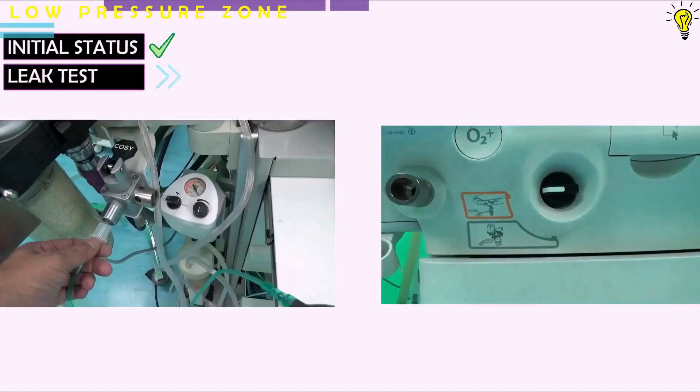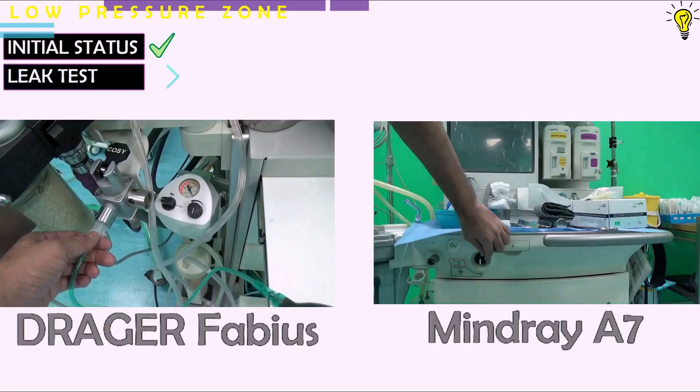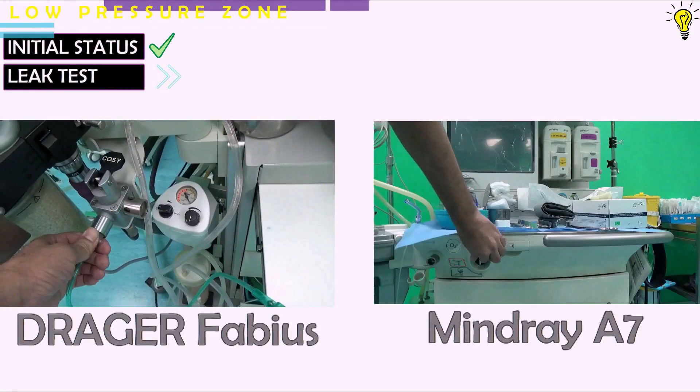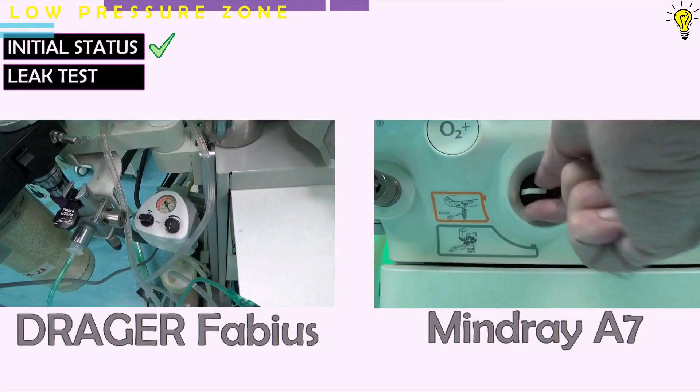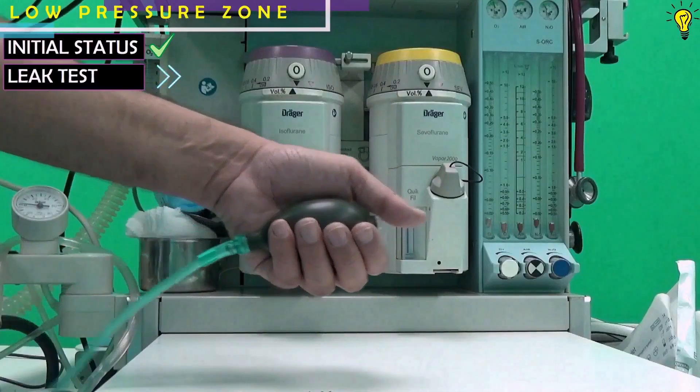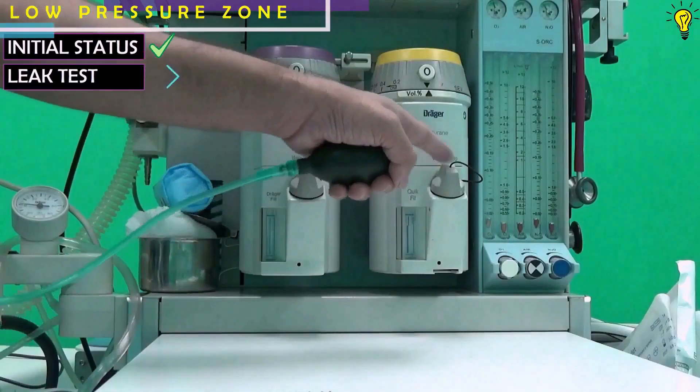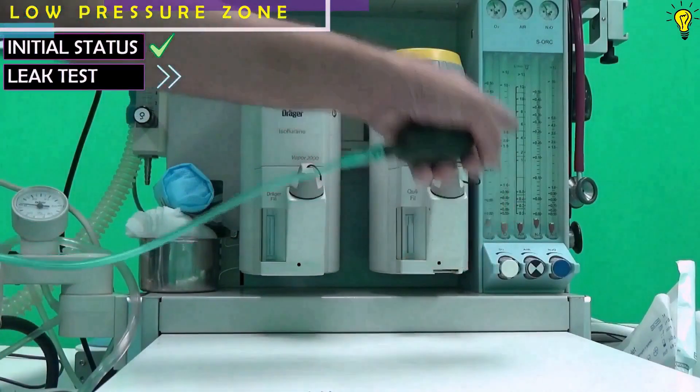Now connecting the connector to the common gas outlet and switching on from circle system to the fresh gas outlet port. The machine is off at the moment. The flow meters are off. The vaporizer is off.